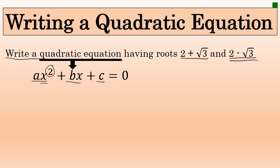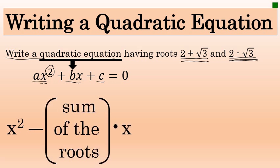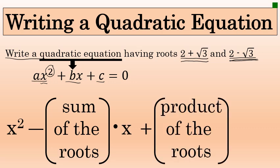In this case, we want to write the quadratic equation that has the two solutions of 2 plus the square root of 3 and 2 minus the square root of 3. The way we will do that is by using a property that states quadratic equations have the form x squared minus the sum of the roots times x plus the product of the roots equals 0.